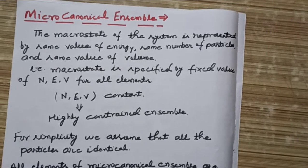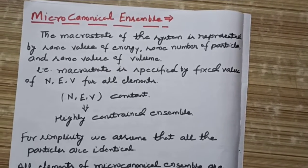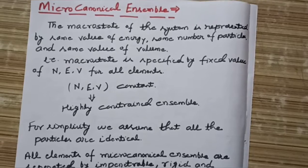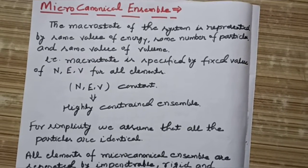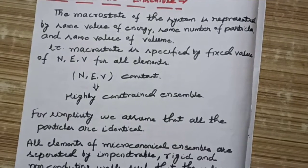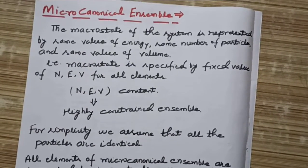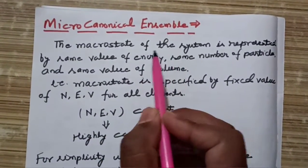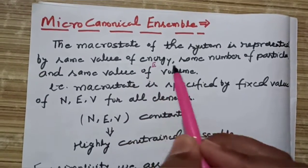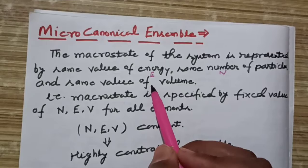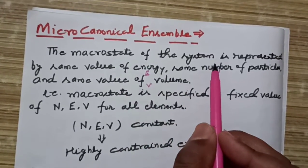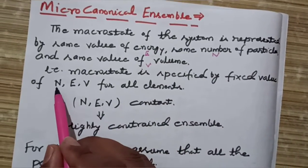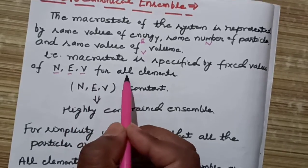Welcome again. In this lecture we will discuss the micro canonical ensemble. As discussed in the previous lecture, there are three types of ensembles: micro canonical ensemble, canonical ensemble, and grand canonical ensemble. In the micro canonical ensemble, the macro state of the system is represented by the same value of energy, same number of particles, and same value of volume. The macro state is specified by fixed values of N, E, and V.